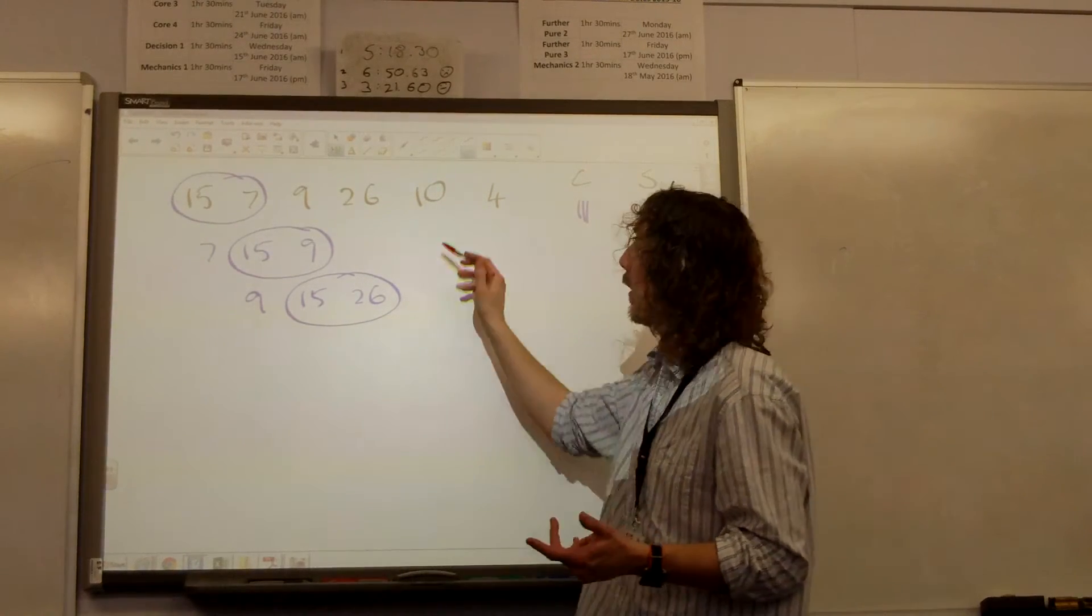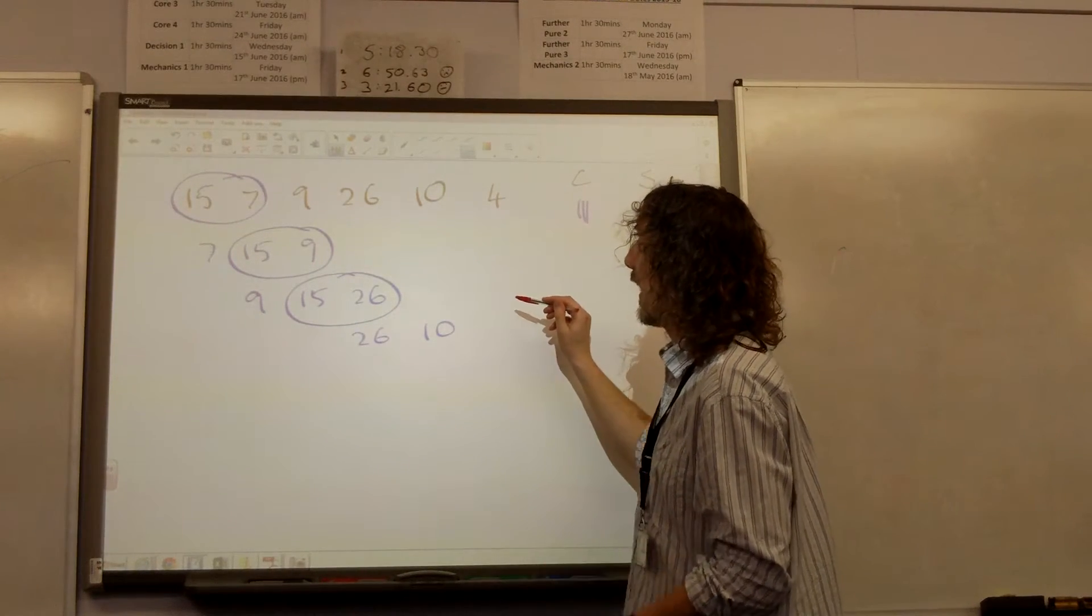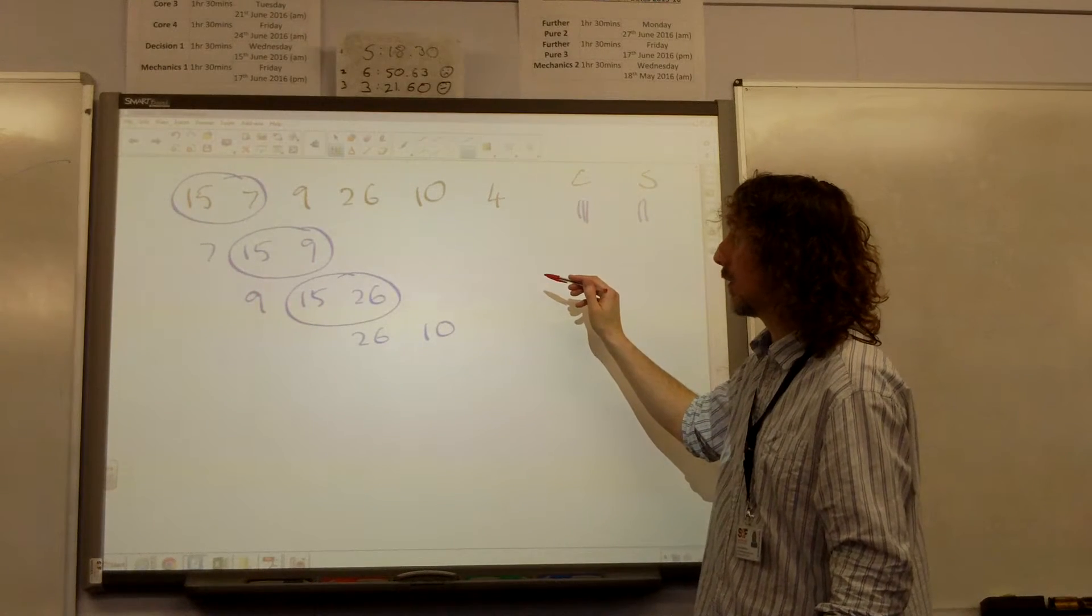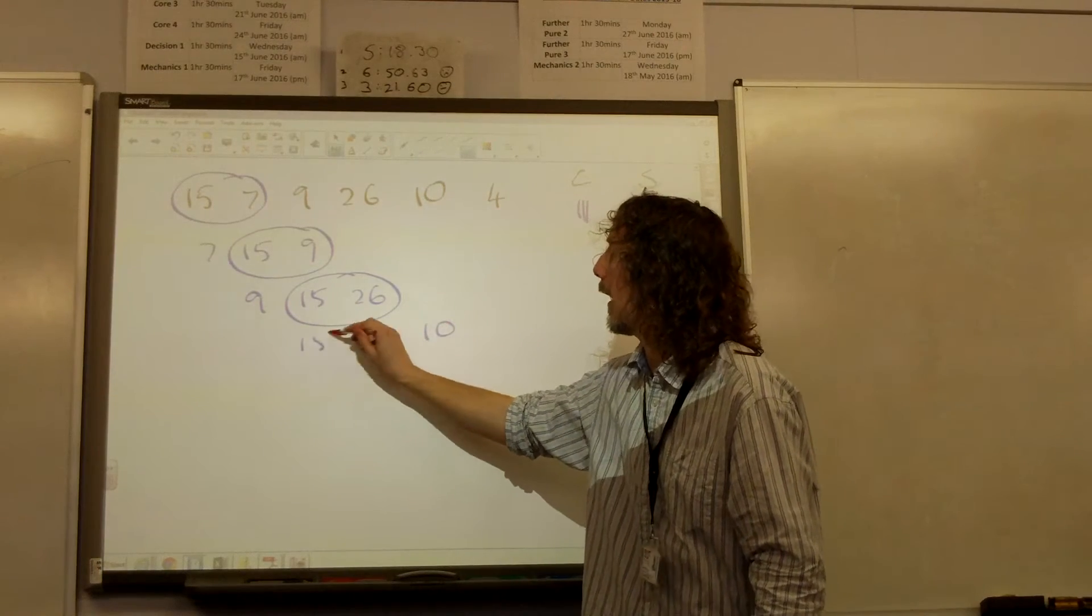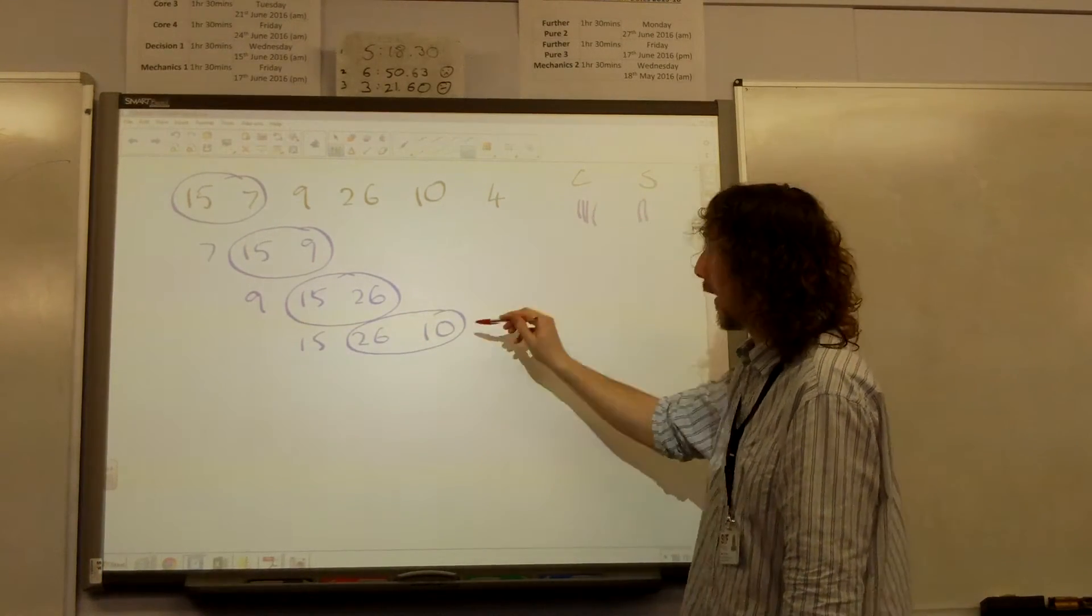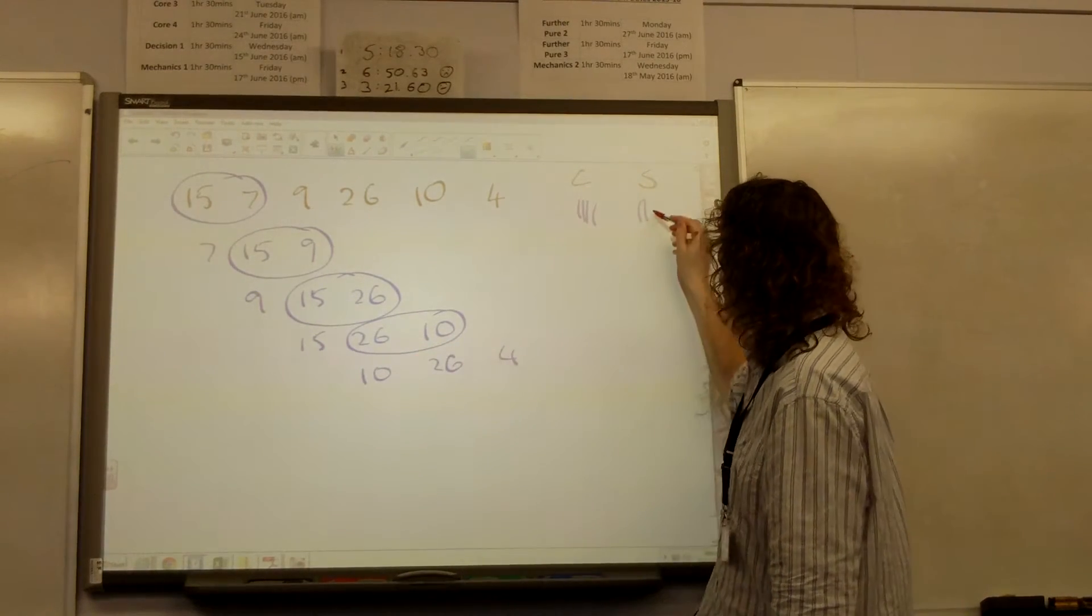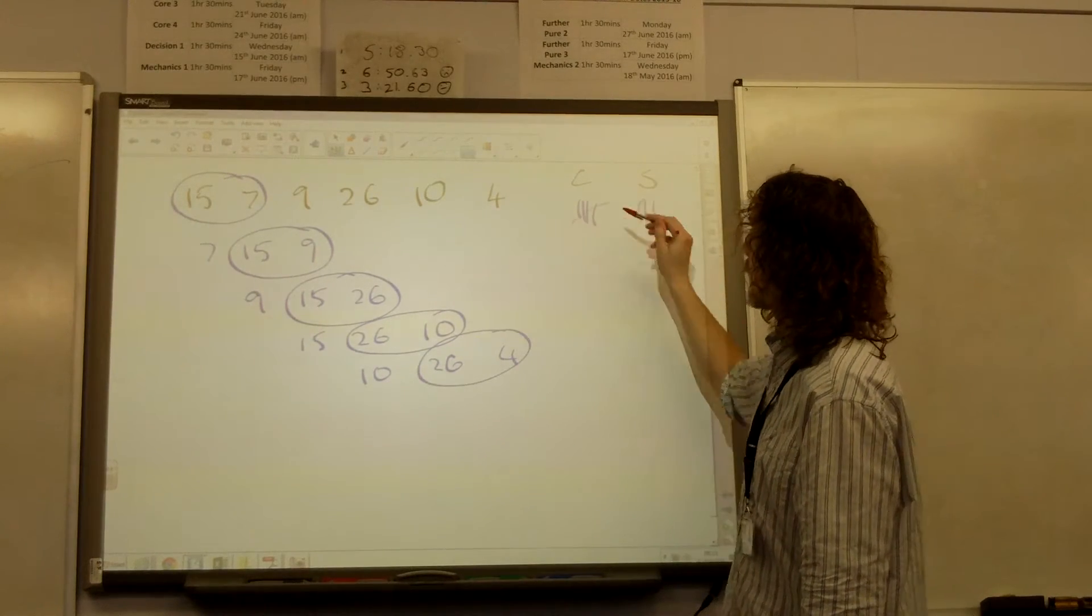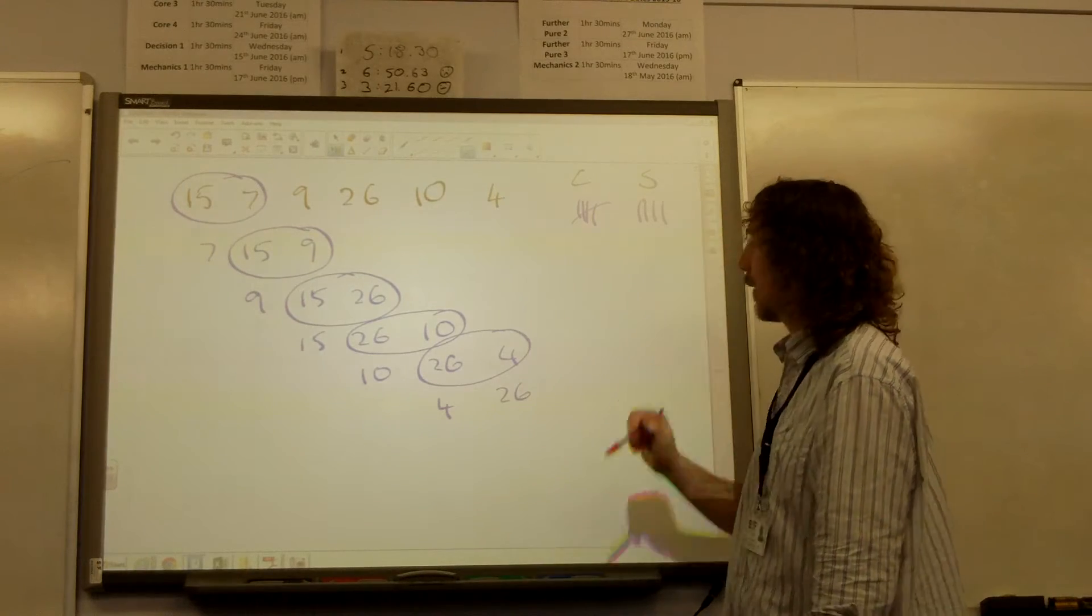So now we're looking at 15 and 9. That's another comparison and that results in a swap. We bring down the 26. So we're going to look at the 15 and 26. That's another comparison. But they don't swap because they were already in the right order. So we now bring down the 10. So we look at the 26 and 10. That is going to be another comparison and that does need to swap. And then we look at 26 and 4. That's another comparison and they would need to swap as well.